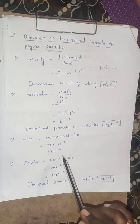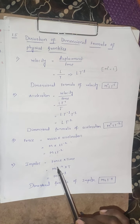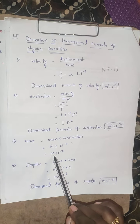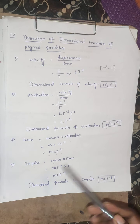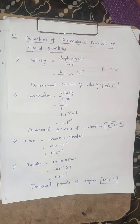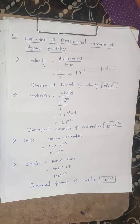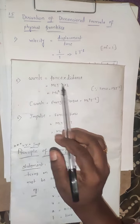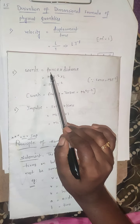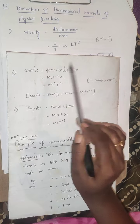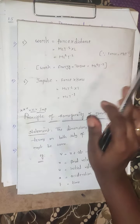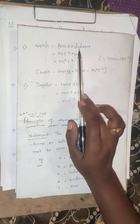Good morning to all students. This is a physics video on the Derivation of Dimensional Formula of Physical Quantities. The first quantity is velocity.